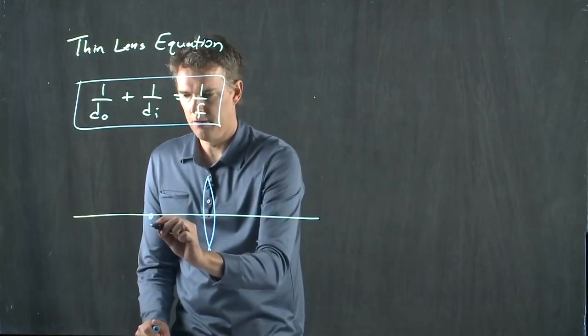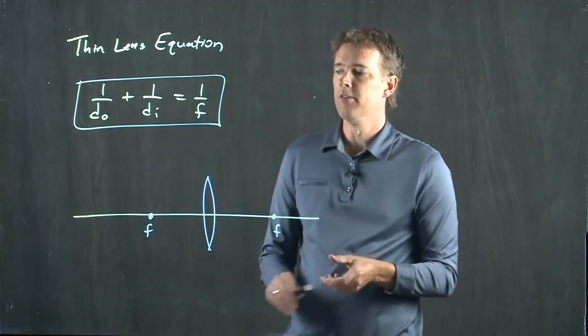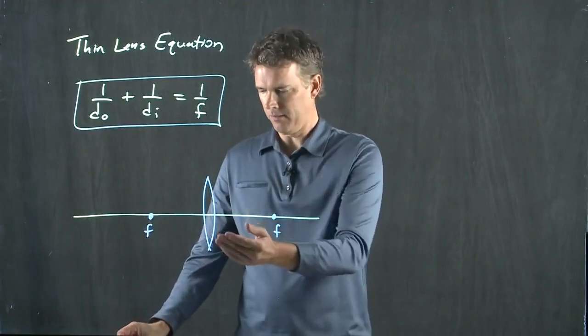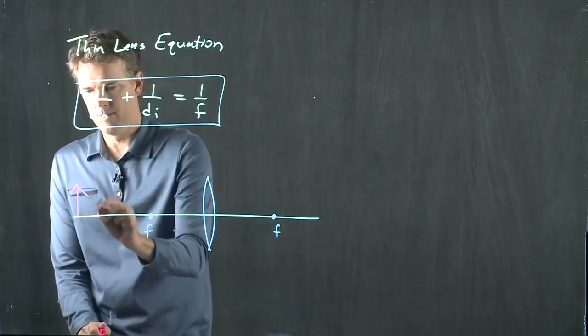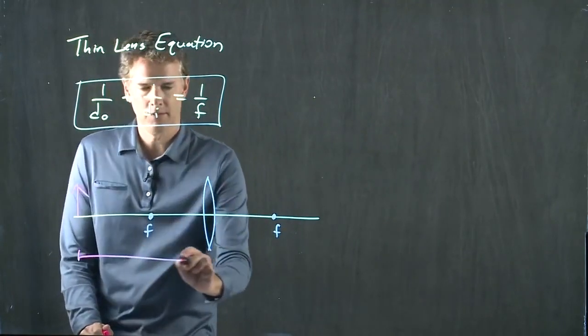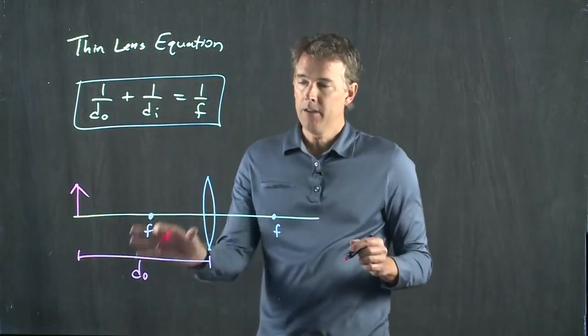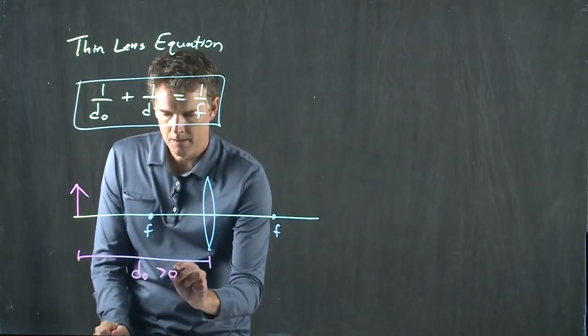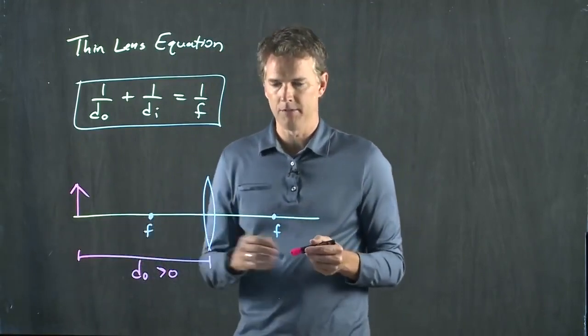This is our focal length F. We've drawn a positive focal length F because it's a positive lens. When we put our object out here, that distance from the center of the lens is DO. And this is a positive number. When DO is to the left, it's a positive number.